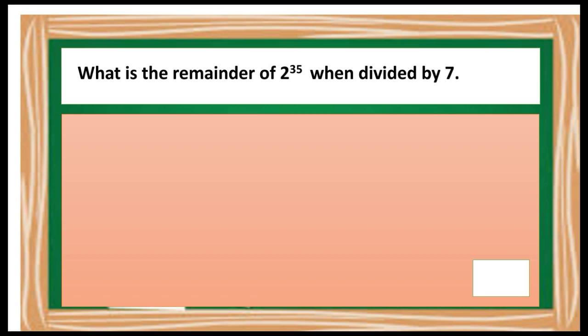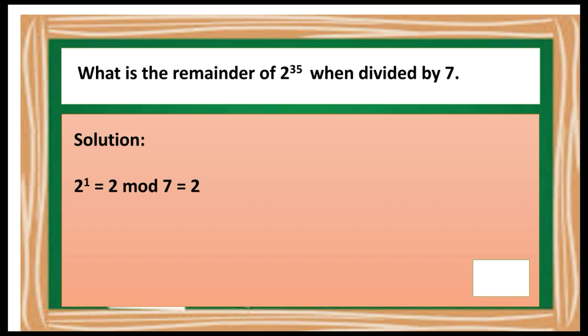Find the remainder of 2 raised to 35 when divided by 7. Same process: get the cycle of 2 that gives remainder 1 when you take modulo of 7. So 2 raised to 1 is 2, and 2 mod 7 is 2. Next, 2 raised to 2 is 4, and 4 mod 7 is 4. Then 2 raised to 3 is 8, and 8 mod 7 is 1 — dividing 8 by 7 gives quotient 1, remainder 1. So we already found the cycle that gives remainder 1 when taking modulo of 7.